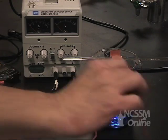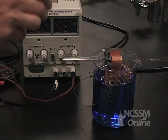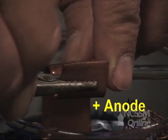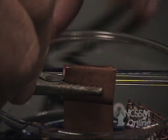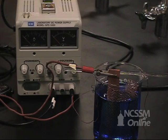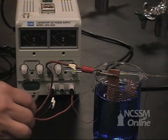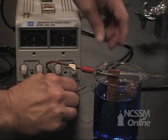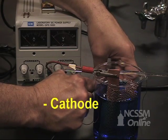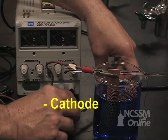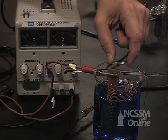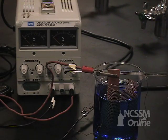We're going to attach our positive lead, the red lead, to our anode. We're going to attach our black lead to wires that come off of the copper mesh. We're going to be careful to make sure that the two electrodes do not touch each other.